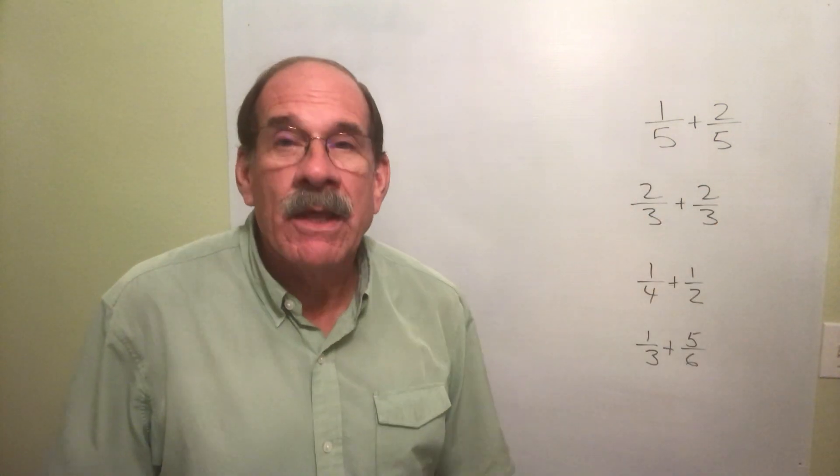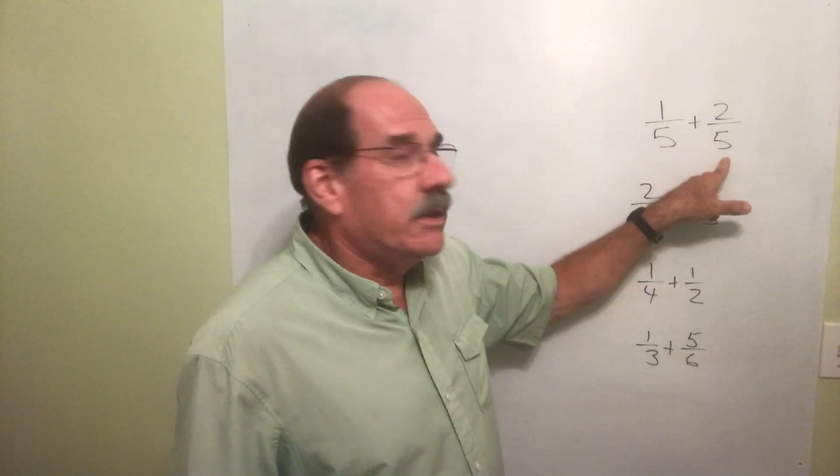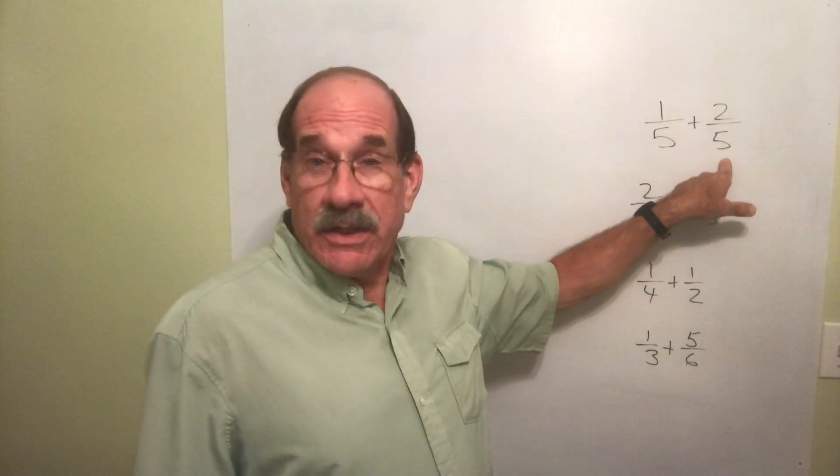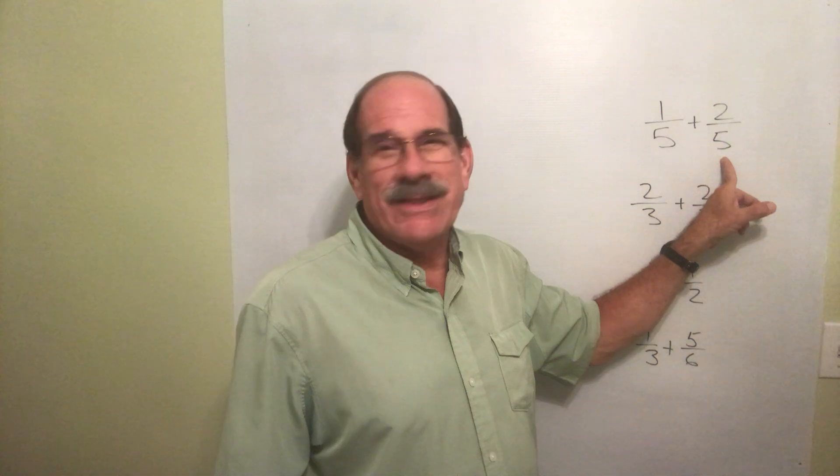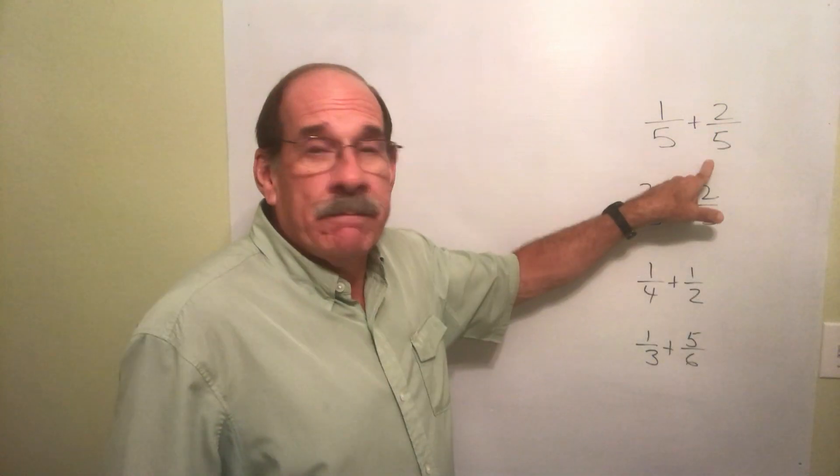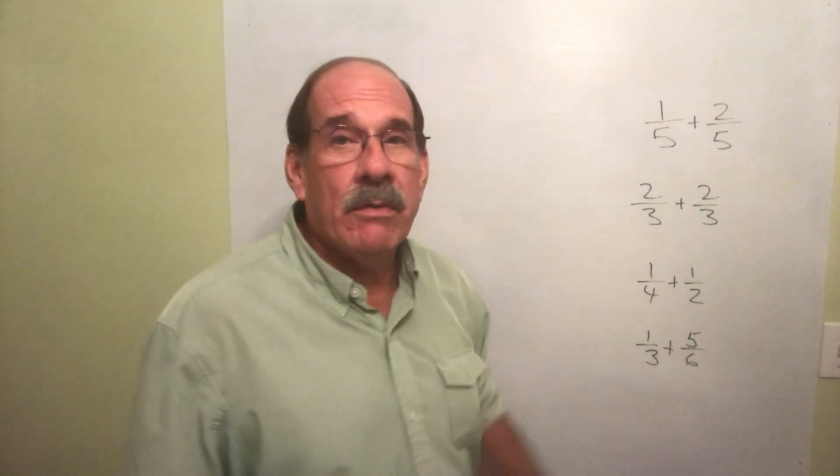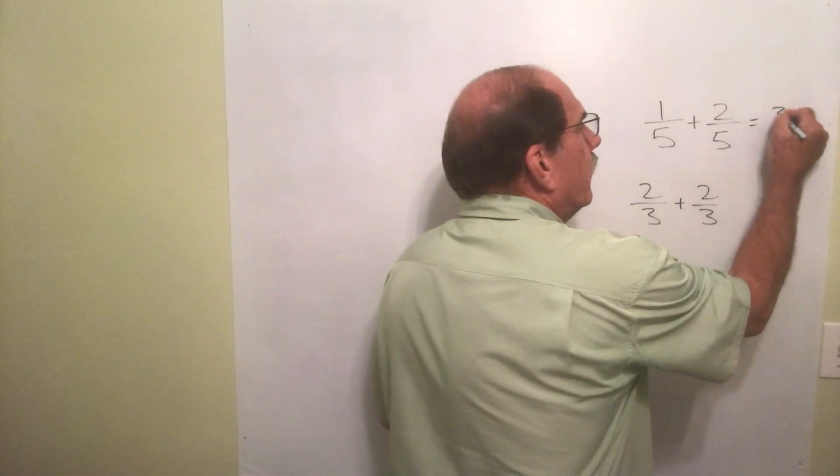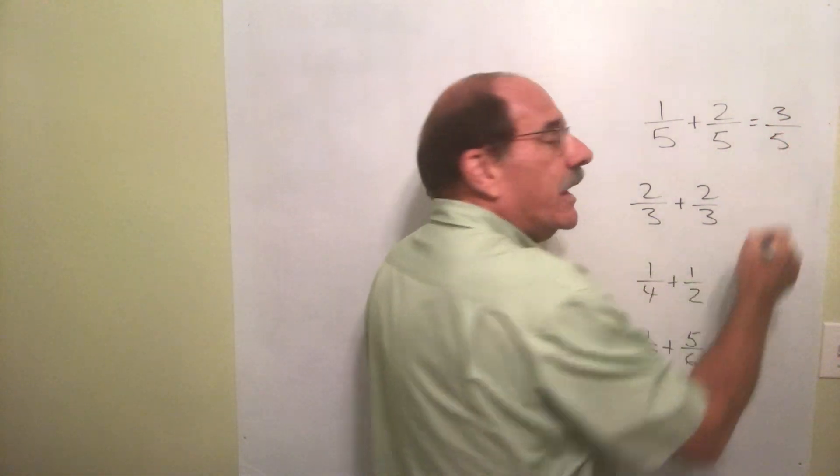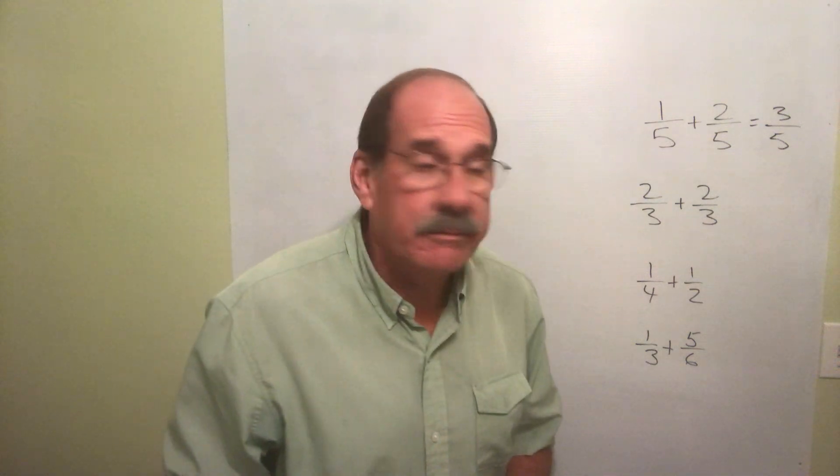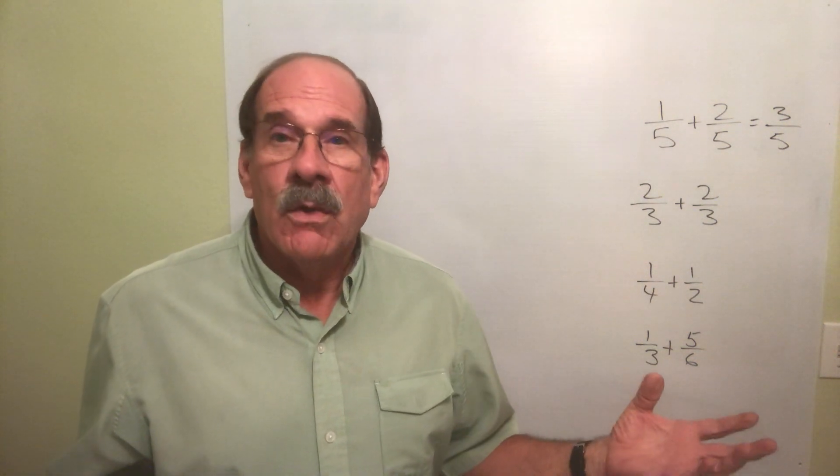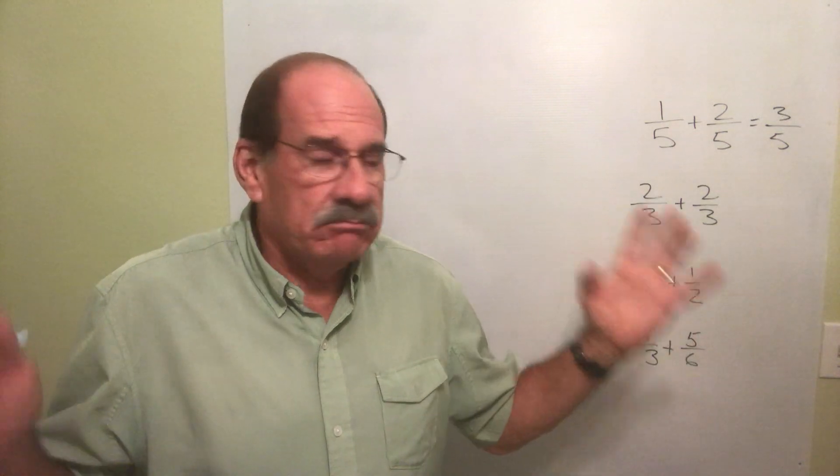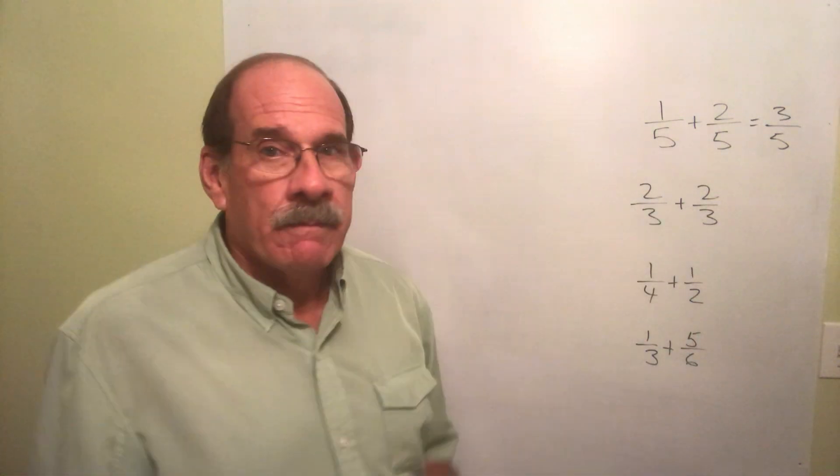So the rule is when the denominator, the bottom number, is the same, you merely add the two numerators. One plus two equals three, and you keep the same denominator. There's an answer: three-fifths. That's a good answer, sure. We don't need to reduce it. Nope, can't reduce it. That's good.